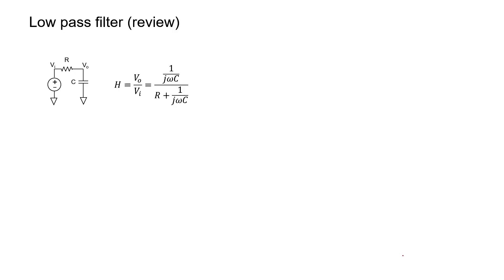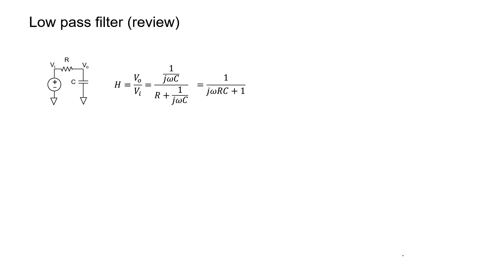Let's start off with a low-pass filter. The transfer function of a low-pass filter can be found by voltage division. If we simplify this expression by multiplying every term by j omega c, we arrive at a very simple expression for the transfer function: 1 over j omega RC plus 1. This fraction is a complex number, and it can be expressed as a magnitude and a phase. Let's go ahead and graph the magnitude and the phase of this particular transfer function.